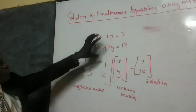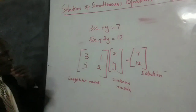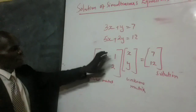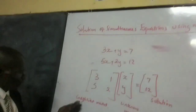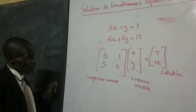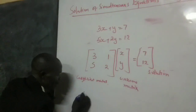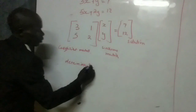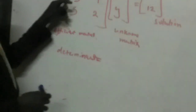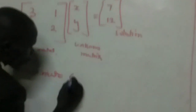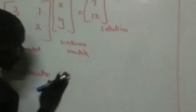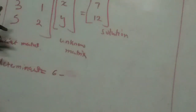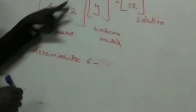Having extracted the coefficients from those linear equations, we then find the inverse of the coefficient matrix. To find the inverse, we first determine the determinant. The determinant is the product of elements in the leading diagonal, which is 2 times 3, that is 6, minus the product of elements in the other diagonal, which is 5 and 1, and that is 5. That gives us a determinant of 1.